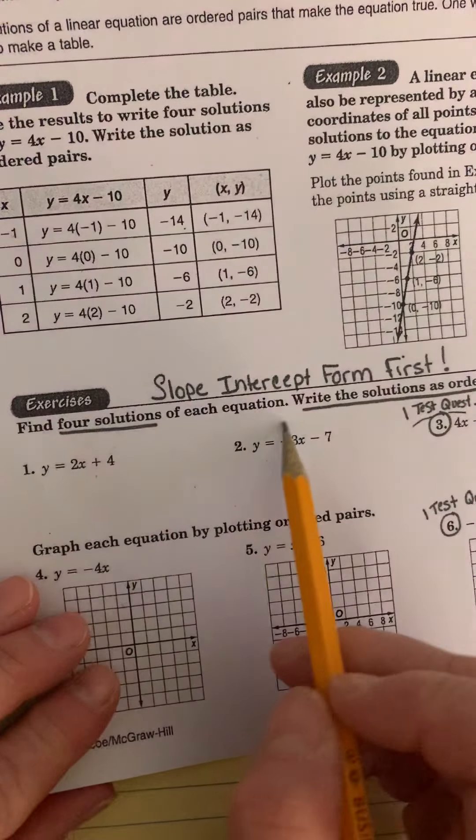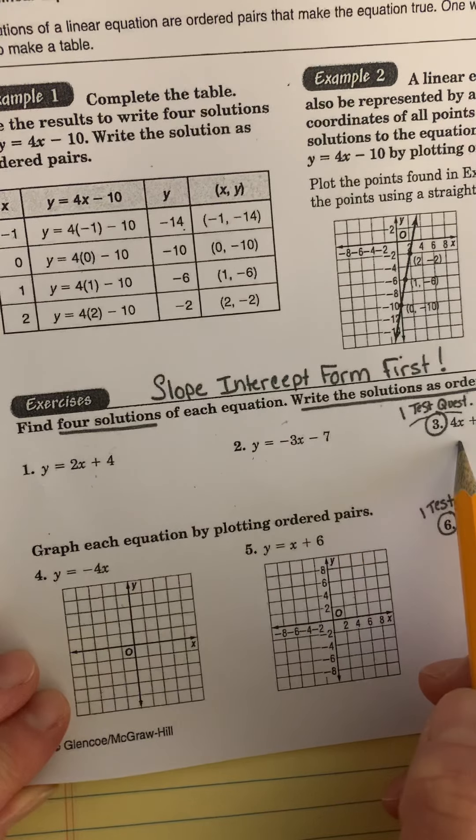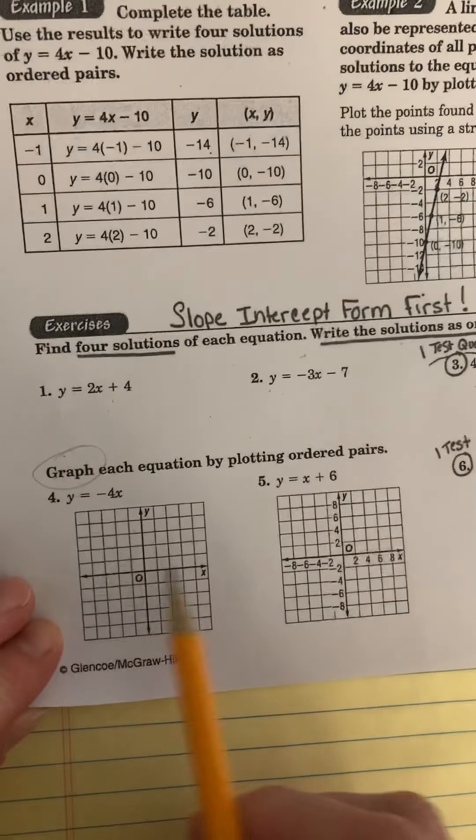So I'm going to do the first couple where it says you just have to find four solutions of each equation and write the solutions as ordered pairs. So there's no graph required here. It's only when you see the word graph and you see graphs that you have to graph. Makes sense?